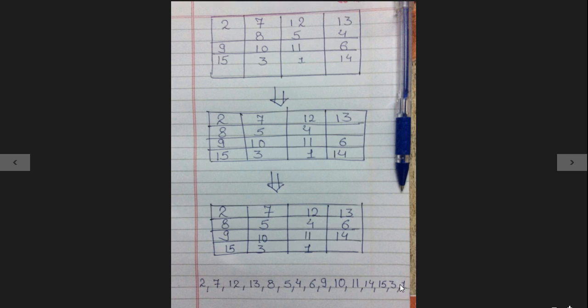Similarly, for the next number 7, check all those numbers which are smaller than 7 and are placed to the right of 7. Here the count comes out to be 5. As you can see, 5, 4, 6, 3 and 1 are those numbers.